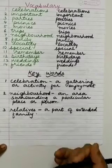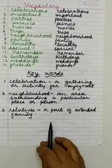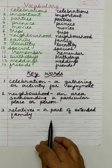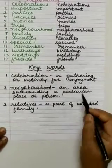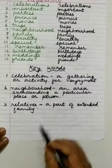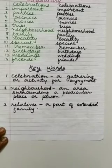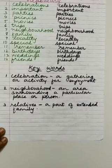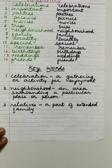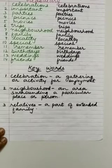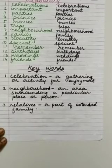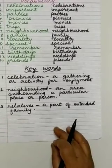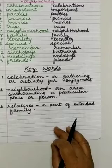As I told you in the previous video, celebrations means when family members, neighbors, or friends come together for enjoyment — that is celebration. Now neighborhood means an area surrounding a particular place or person. Neighborhood basically means whoever is staying near you, in your area — the people and things which are available in your area — that is all neighborhood.